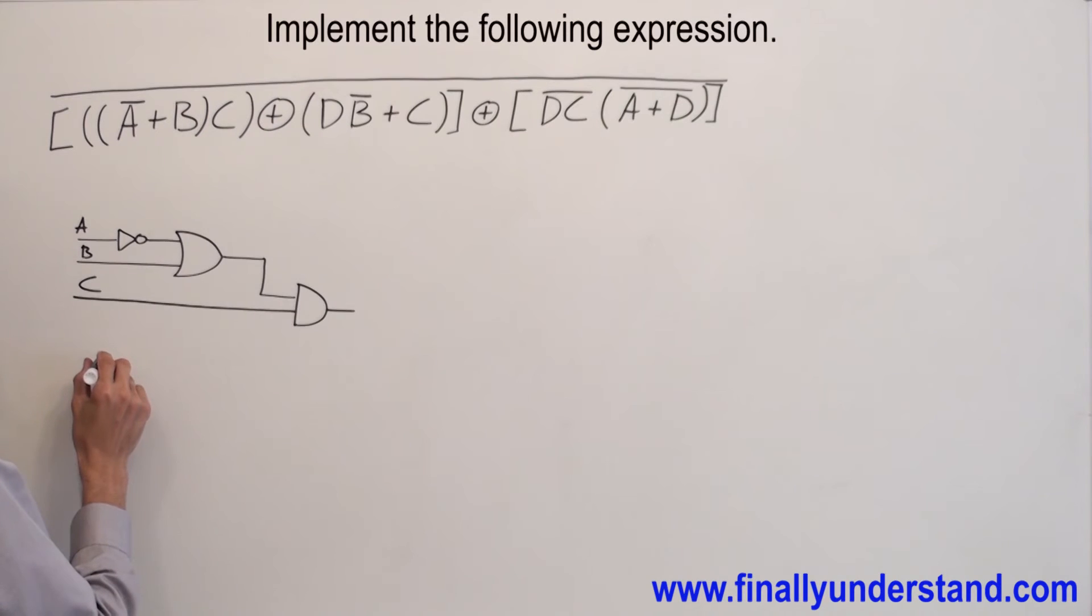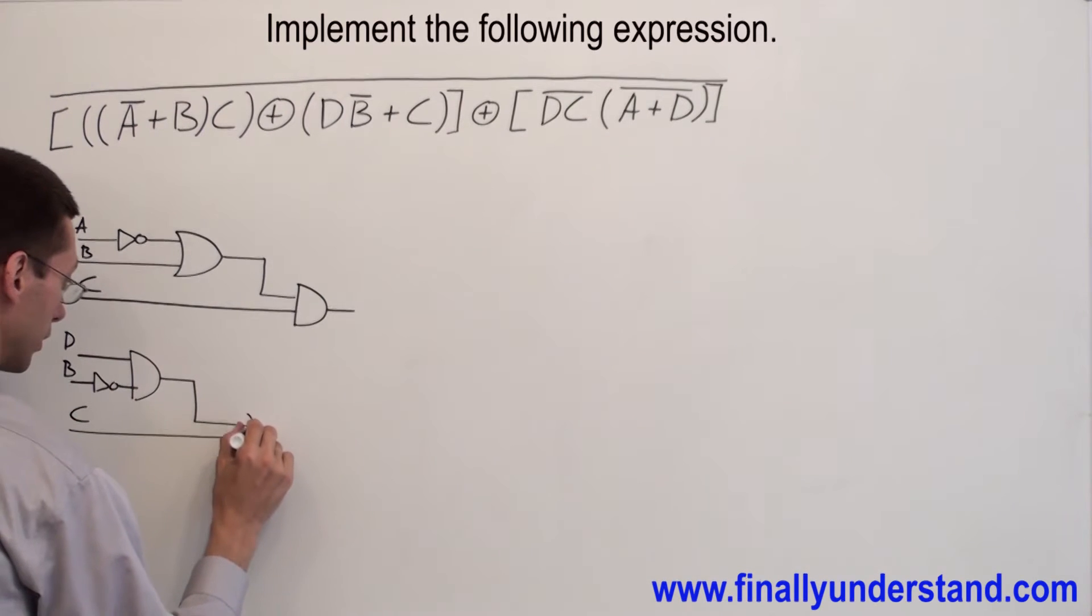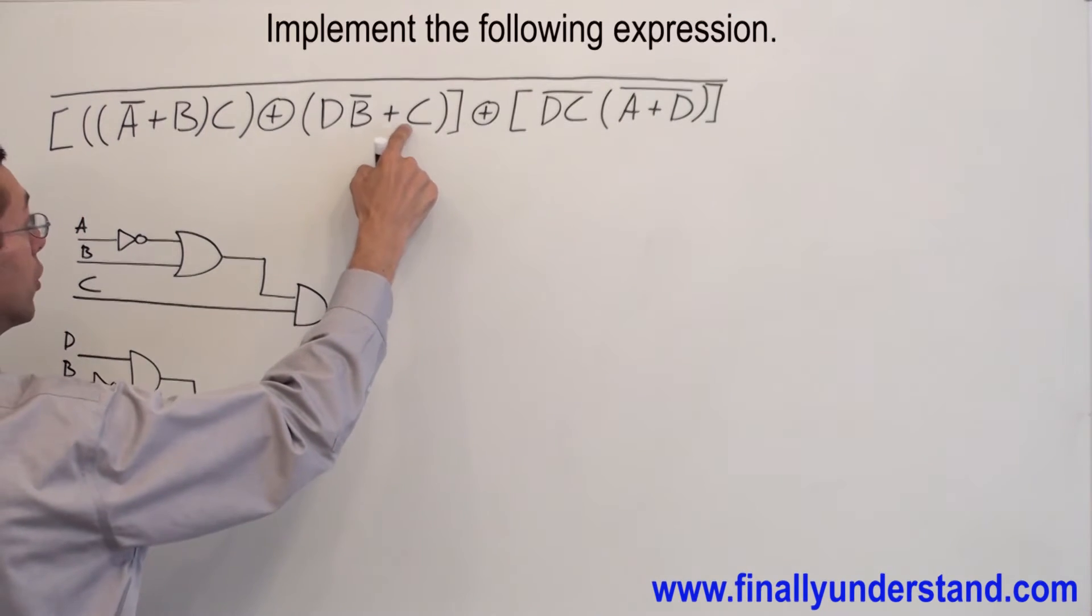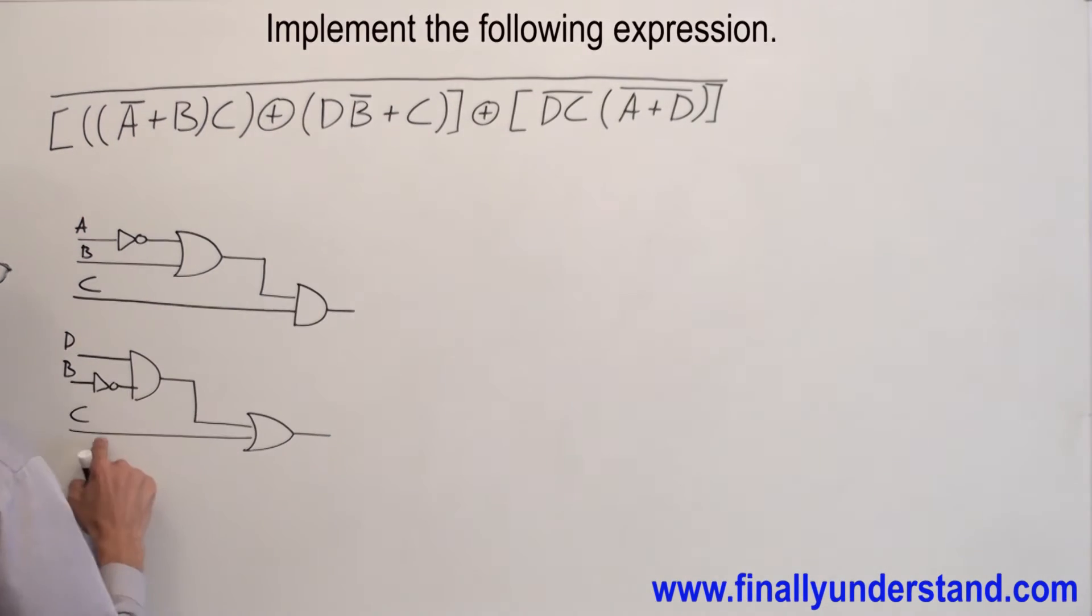Let me go over this one. I have D ANDed with B bar. This is D, this is B bar, and I have C ORed with my AND gate. C ORed with the AND.